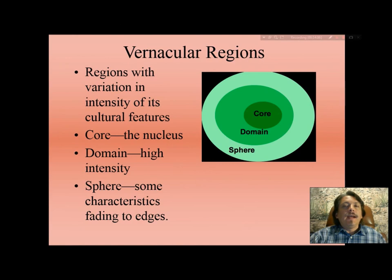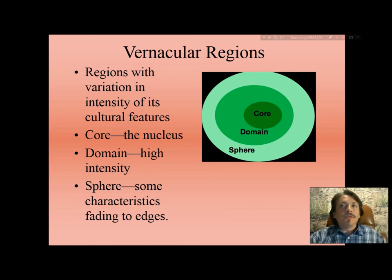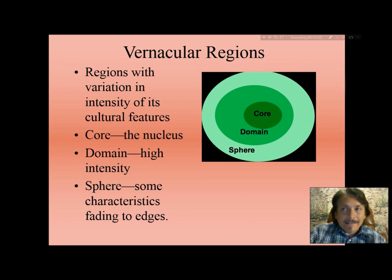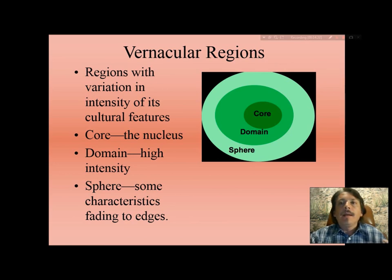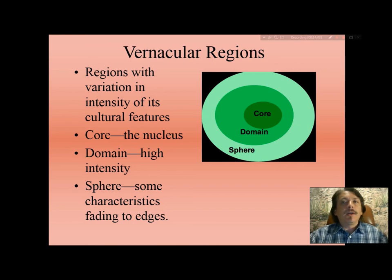Vernacular regions have variation in the intensity of their cultural features. To simplify their illustration, geographers employ what we call a core, domain, and sphere to perform a cultural analysis. The core is the heart, hearth, or nucleus of a cultural region. The domain is where there is a high intensity of the ideas that define the region. The sphere is where some characteristics can be found in an ever wider geographic area, but they fade out into the edges and disappear.